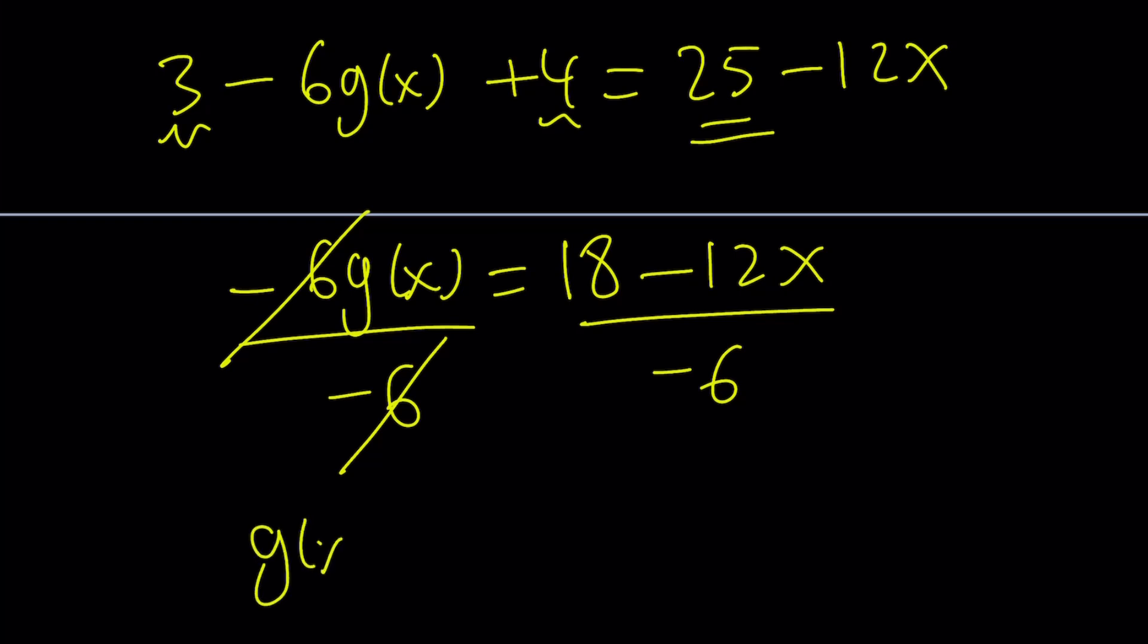But you can do the following. If you want, you can factor out negative 6 in the numerator. That's going to give you negative 3 plus 2x. And that's divided by negative 6. Just to get rid of all the negatives together. Negative 6 is going to cancel out.